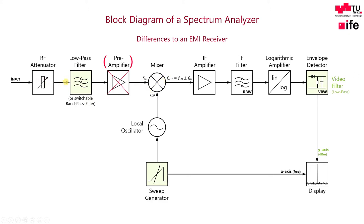The attenuator is followed by a low-pass filter. This filter blocks very high frequency signals from reaching the mixer. Otherwise, unwanted responses could occur. Some spectrum analyzers are using pre-selectors instead of a simple low-pass filter. Same as in EMI receivers, the pre-selector is a switchable filter bank where an appropriate filter is chosen automatically.